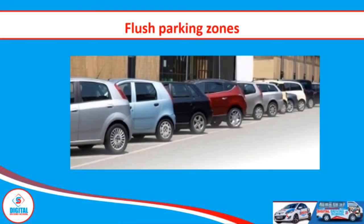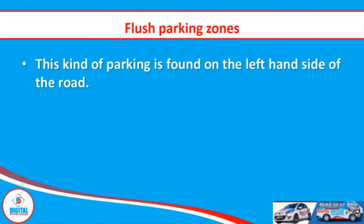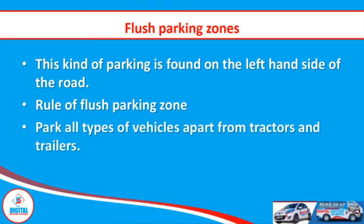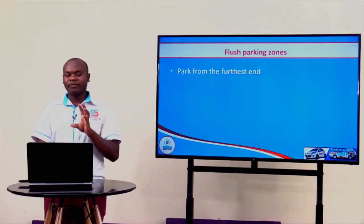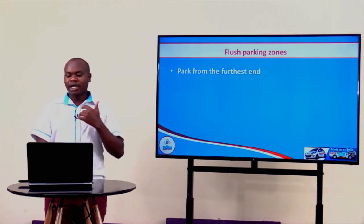Now let us look at the flash parking. This type of parking is found on the left-hand side of the road in the direction of travel of the vehicle. In angle parking we only parked saloon cars or vehicles under category class B. But in flash parking we park all types of vehicles except trailers and tractors — meaning you can park minivans and lorries there. The only similarity between angle parking and flash parking is parking from the farthest end.